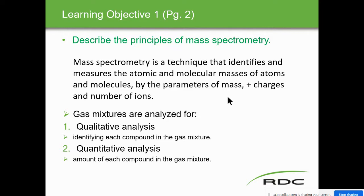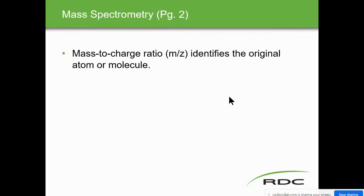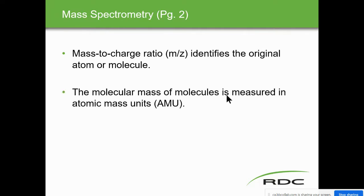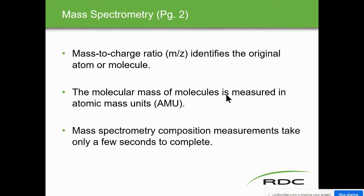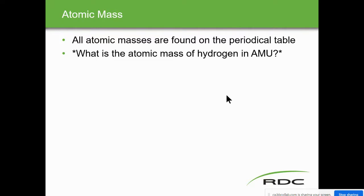All of these atoms, elements, and molecules are found on the periodic table, and each one has a molecular mass. These analyzers separate and identify against known compounds, elements, and molecules. They also measure the positive charges of the number of ions — every molecule going through the analyzer is made into a positive ion. They are gas mixture analyzers only, performing qualitative analysis — identifying each compound in the gas mixture — and quantitative analysis, measuring the amount of each compound.